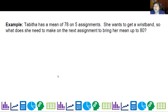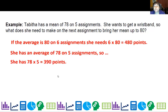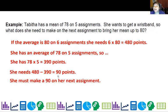Tabitha has a mean of 78 on five assignments. She wants to get a wristband. What does she need to make on the next assignment to bring her mean up to an 80? For a group of assignments of equal weights, she's going to have an average of 80 on six assignments. That means when I add up all the assignments together, I should get 480 points. She has an average of 78 on five, so she has a total of 390 points. How far short am I? 90 points. So if she makes a 90 on the next assignment, then her average will go up to an 80.